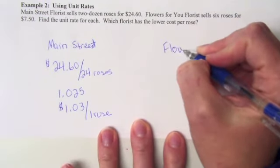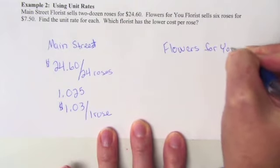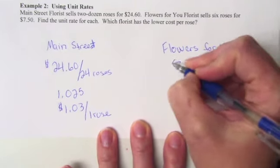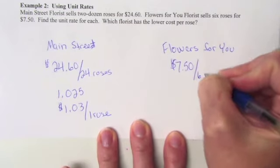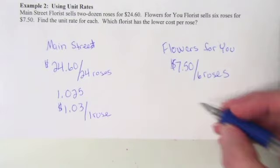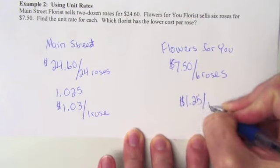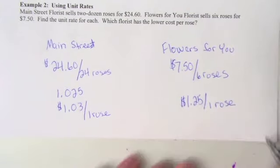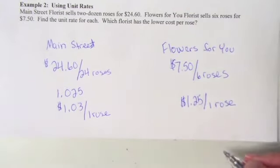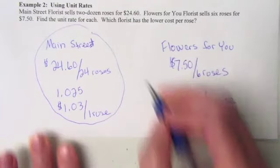For Flowers for You, it's $7.50 and you get six roses. So let's go ahead and divide that out and see what our unit rate is on that. You get $1.25. So this one is $1.25 per one rose. So the better deal, the best unit rate is for Main Street florists because it's $1.03 per every rose.